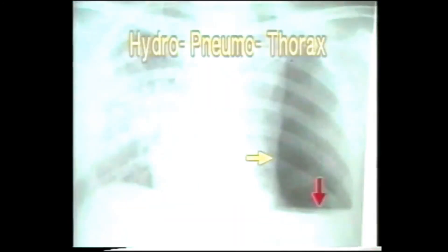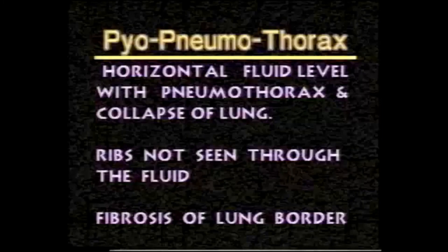This is another X-ray showing hydropneumothorax on the left side. Note the fluid level, the air above it, and the collapsed lung. In the close-up view, the red arrow shows the fluid level and the yellow arrow shows the collapsed lung border. Whenever there is a horizontal fluid level with pneumothorax and lung collapse, it is a hydropneumothorax or pyopneumothorax.